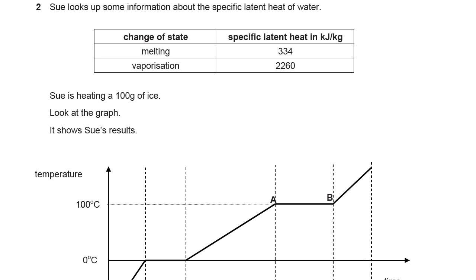Question 2 on this OCR P1 section. Sue looks up some information about the specific latent heat of water. Specific latent heat is the amount of energy needed to change the state of a substance.